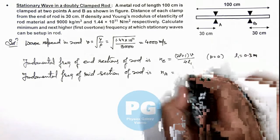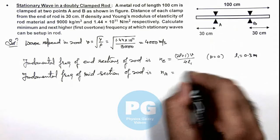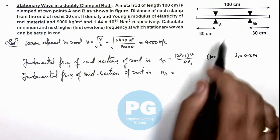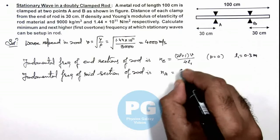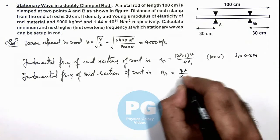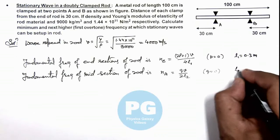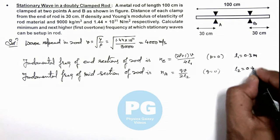So it must be an integral multiple of v / 2L for any harmonic at which stationary waves can set up. So here we write it q × v / 2L_2, with q is equal to zero for fundamental, and L_2 is equal to 0.4 meter.